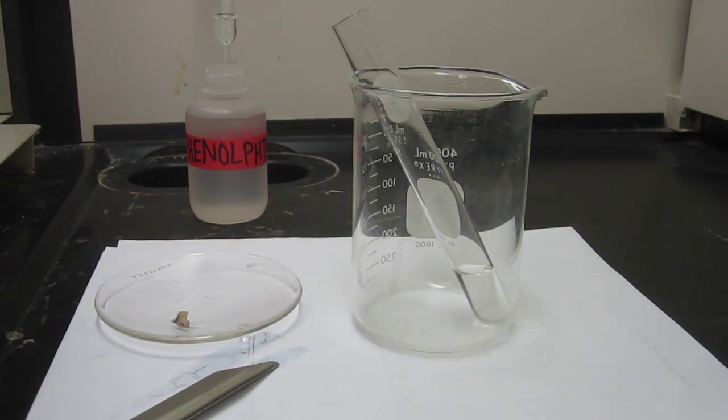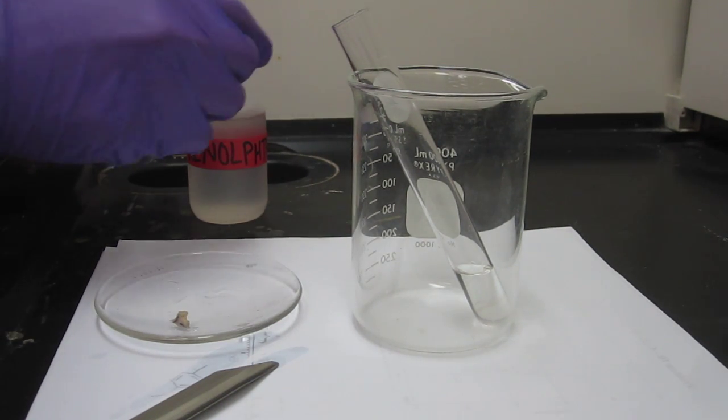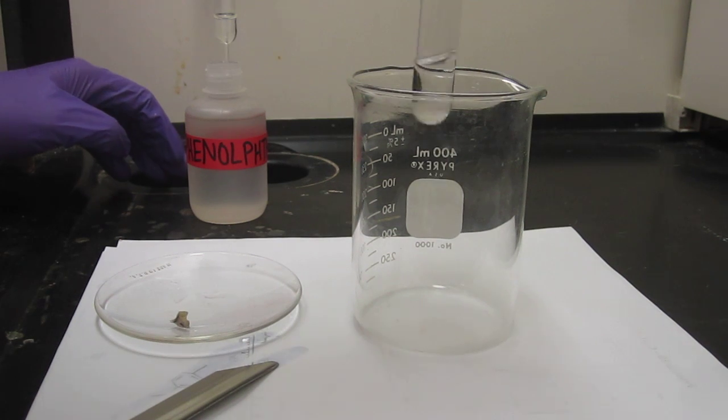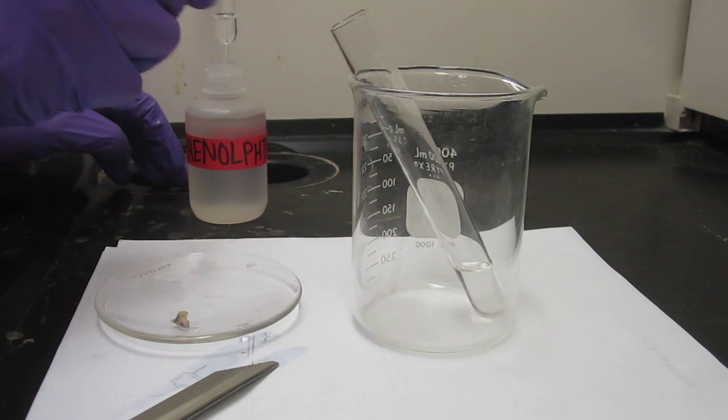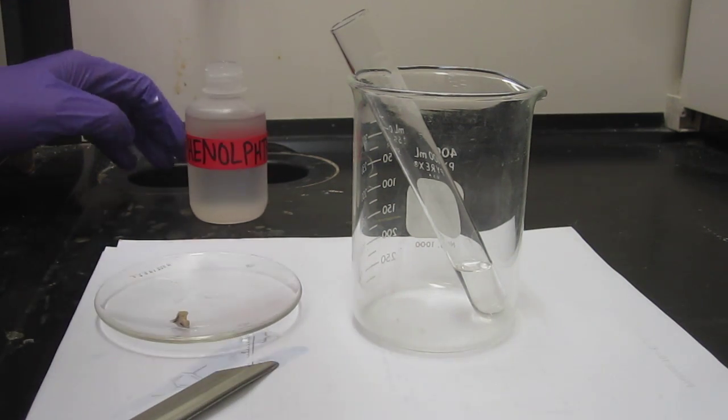Okay, so let's do the second of the two reactions. We have about two milliliters of ethanol in this test tube here, and we're going to put a couple of drops of phenolphthalein in there.